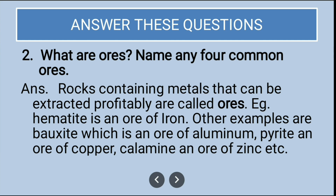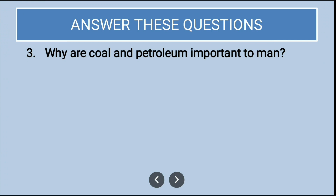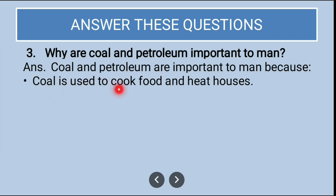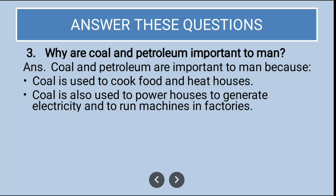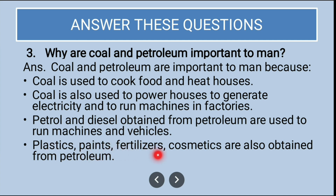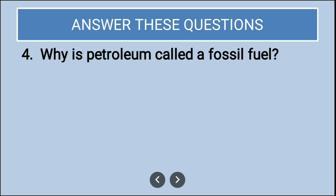Why are coal and petroleum important to man? Coal is used to cook food, heat houses, generate electricity, and run machines in factories. Petrol and diesel obtained from petroleum are used to run machines and vehicles. Plastics, paints, fertilizers, and cosmetics are also obtained from petroleum.